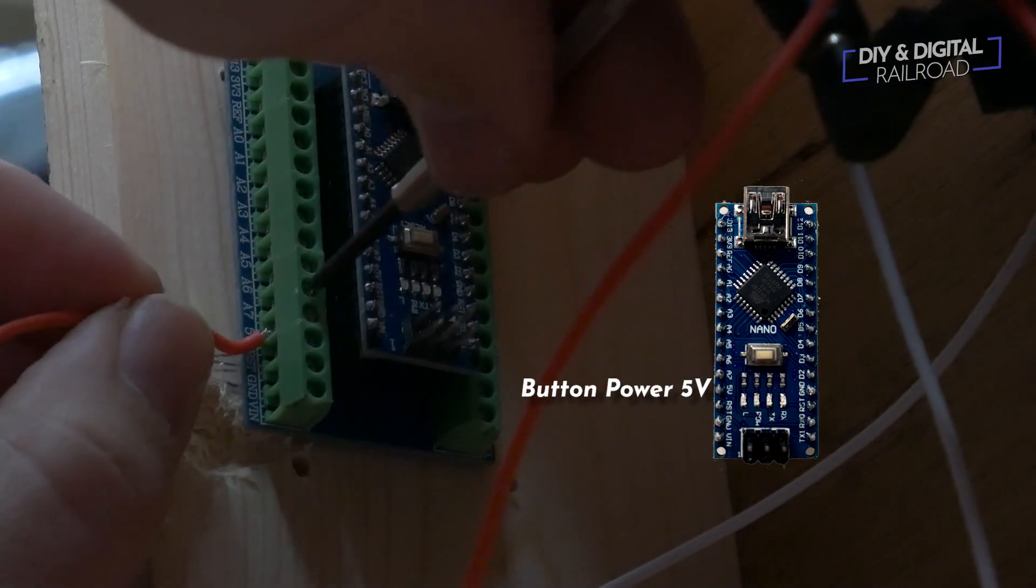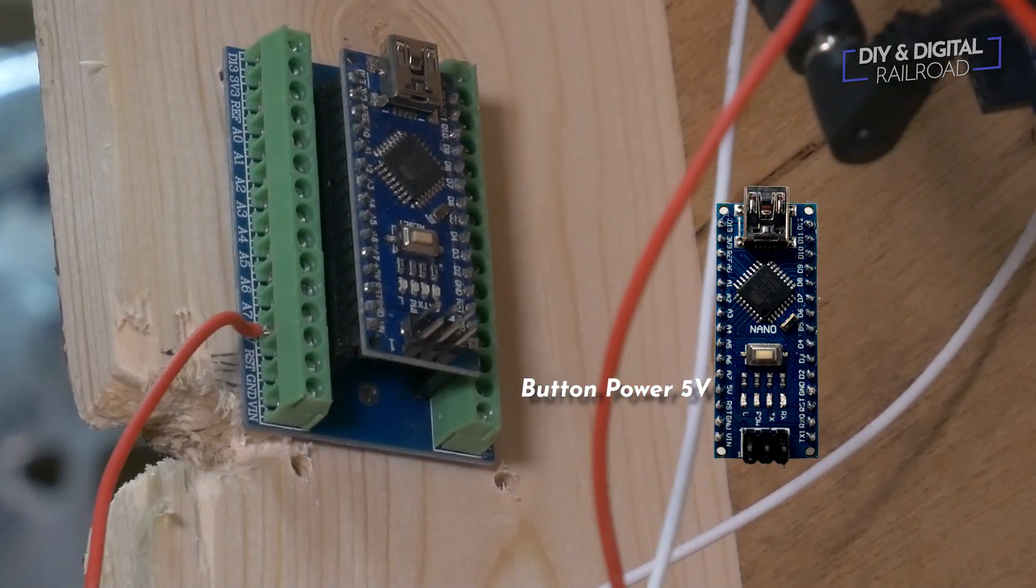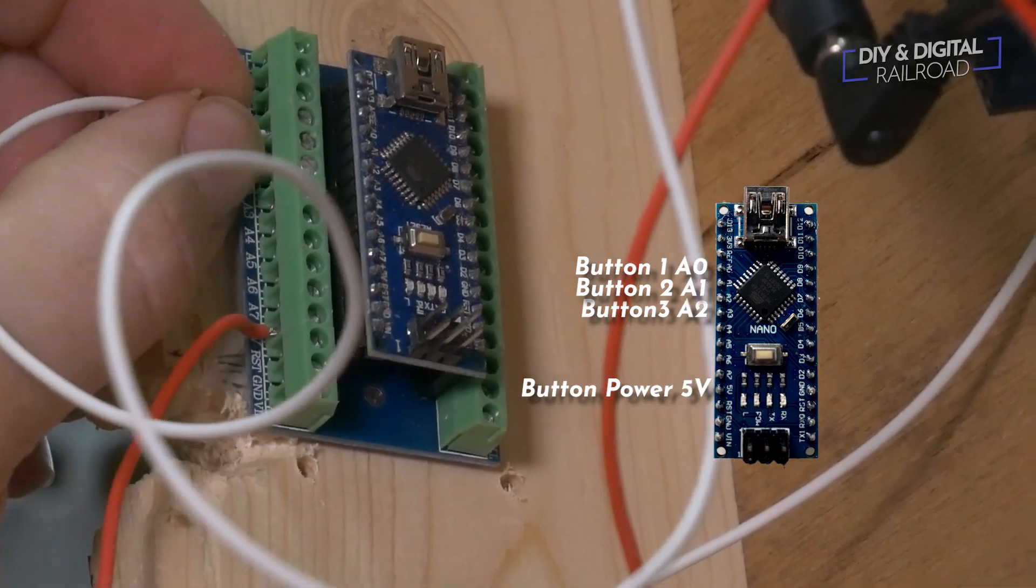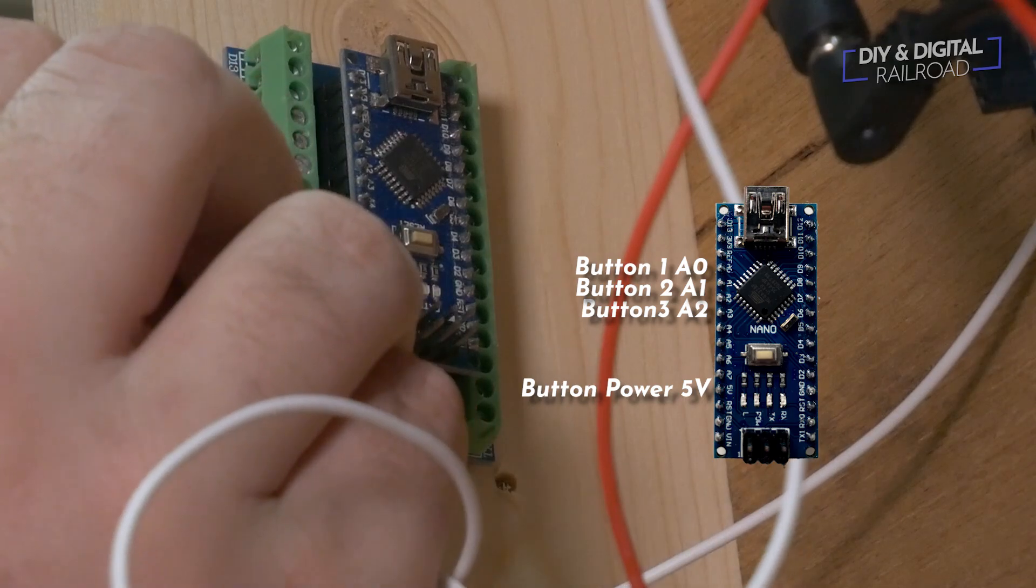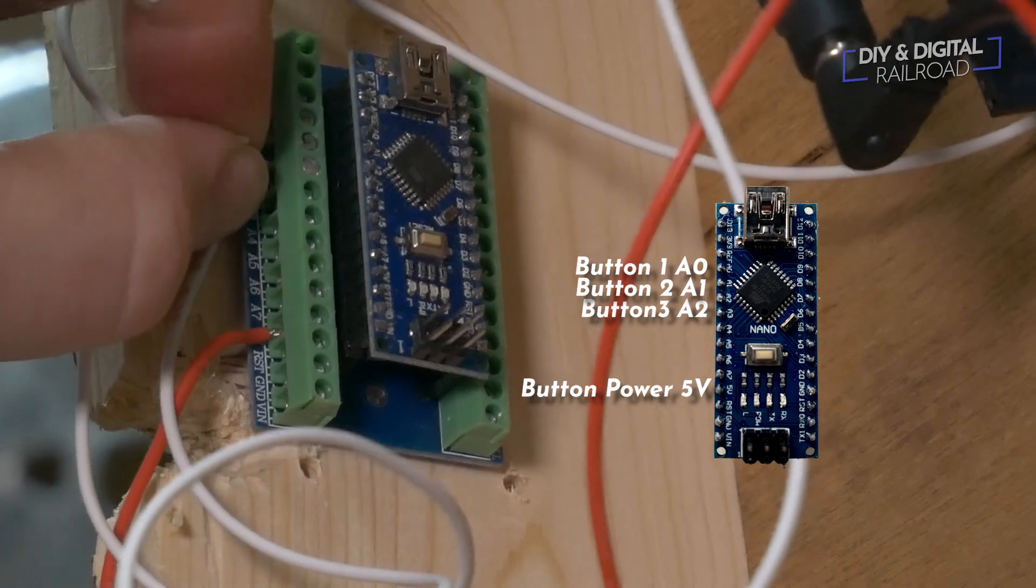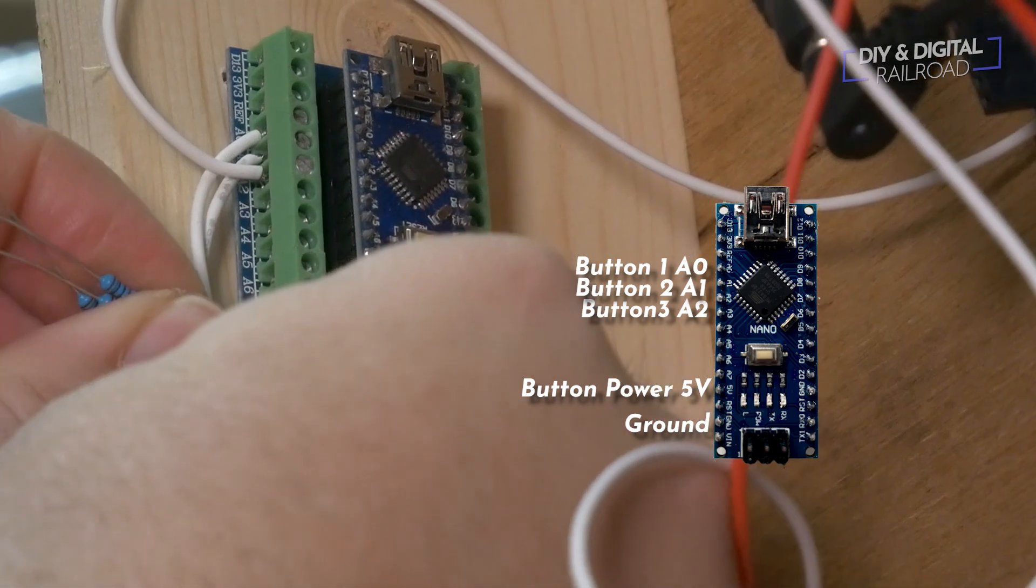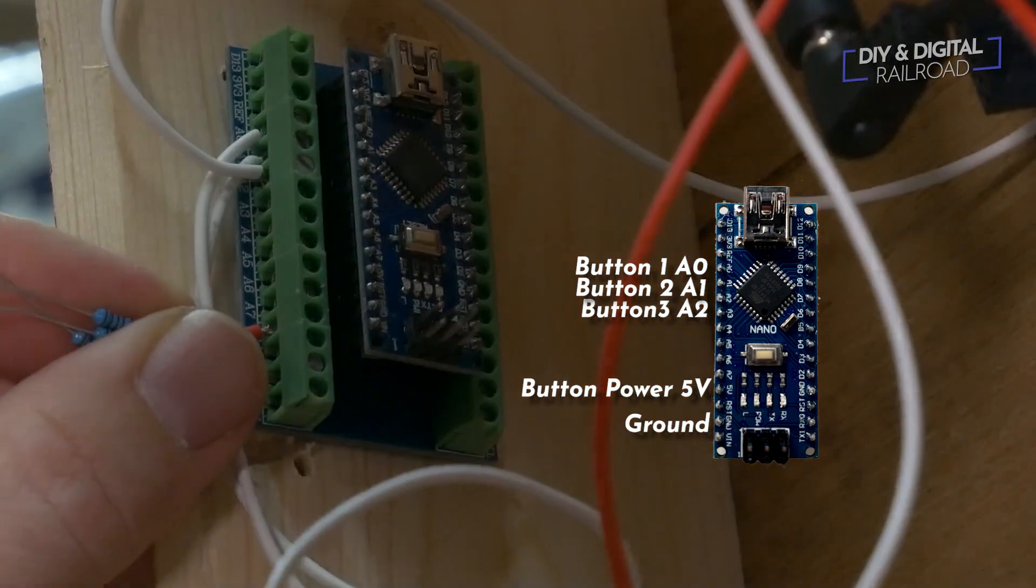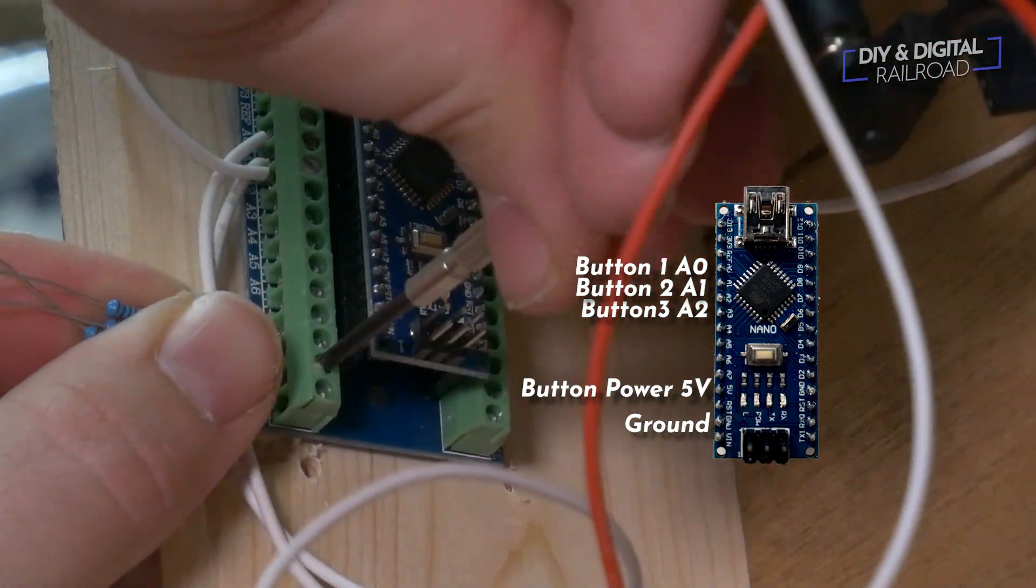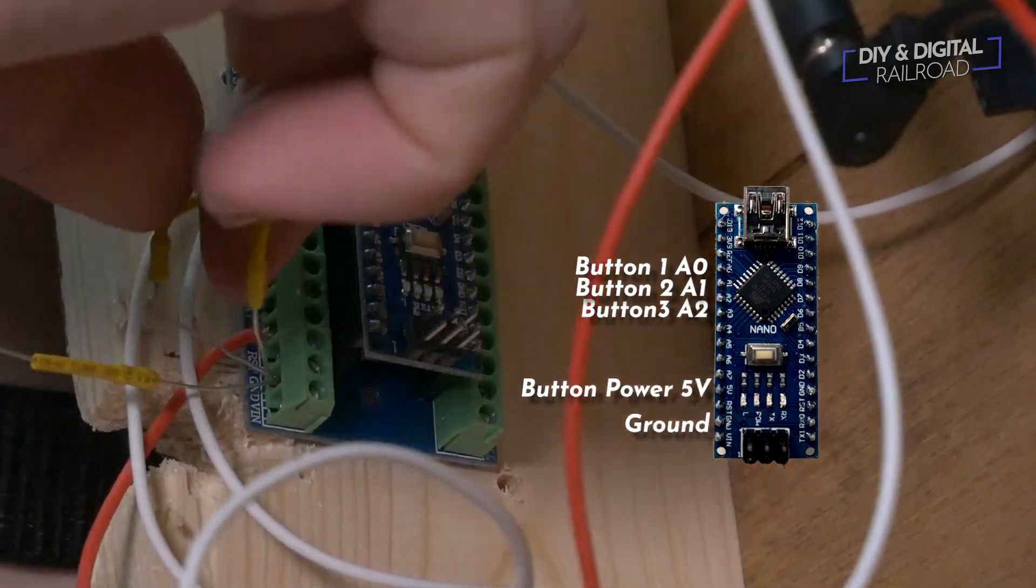First we connect the 5-volt line from the buttons to the 5-volt pin on the Arduino. We then connect the white button wires to pins A0, A1, and A2. I then use 1k resistors as jumpers to the ground pin from analog pins A0, A1, and A2. To prevent any short circuits I partially cover each one of the resistors with some heat shrink tubing.